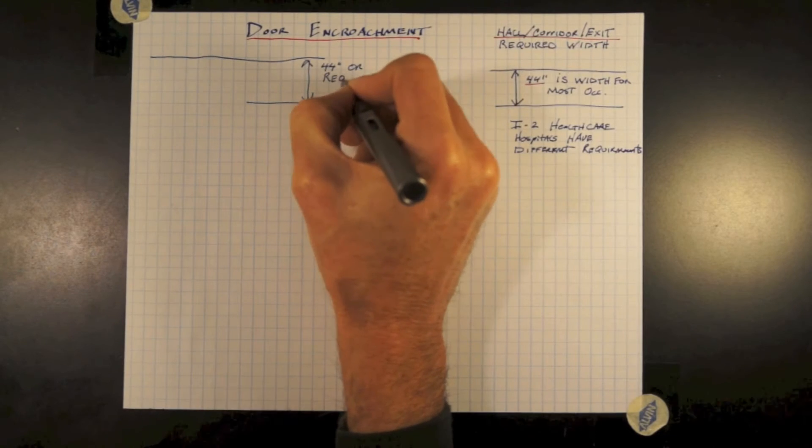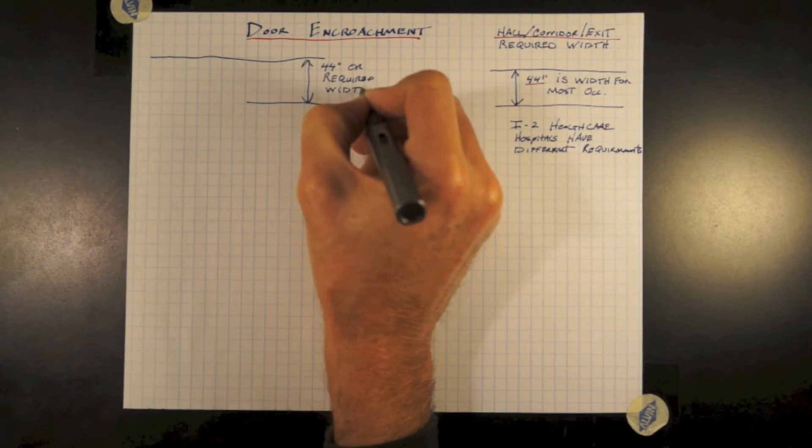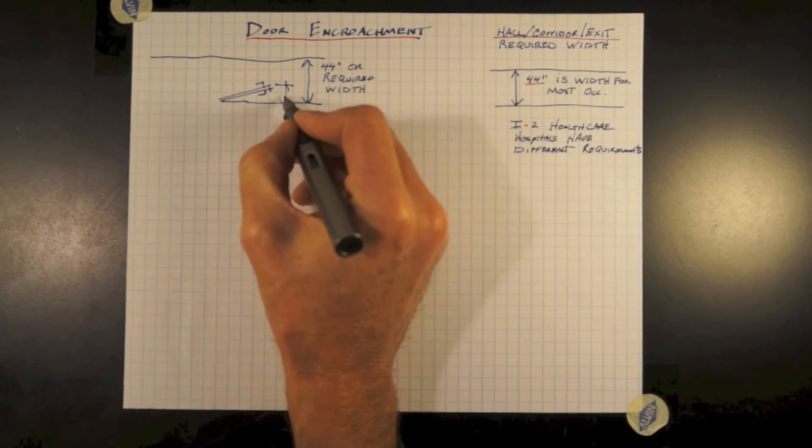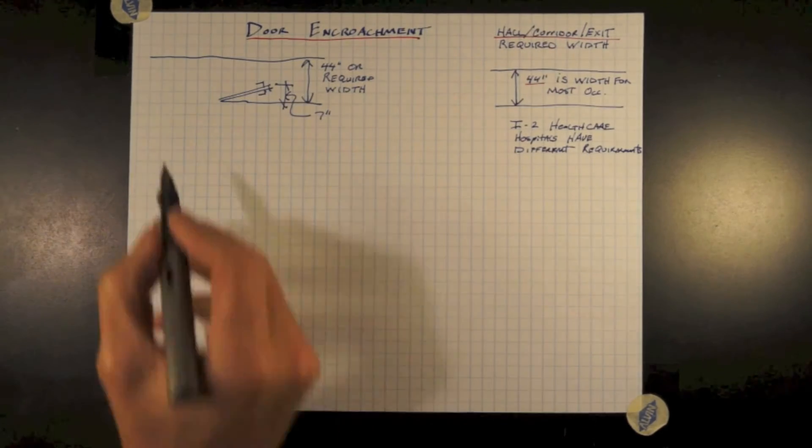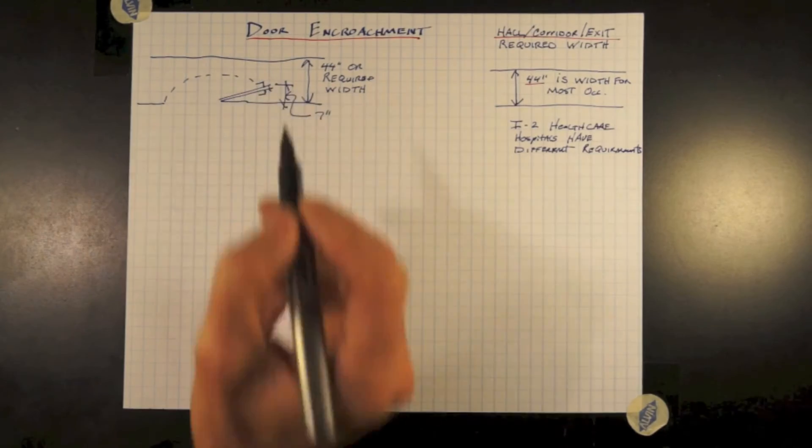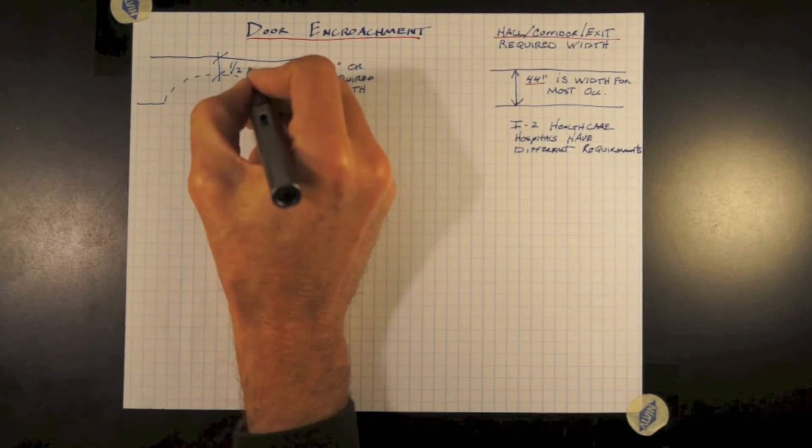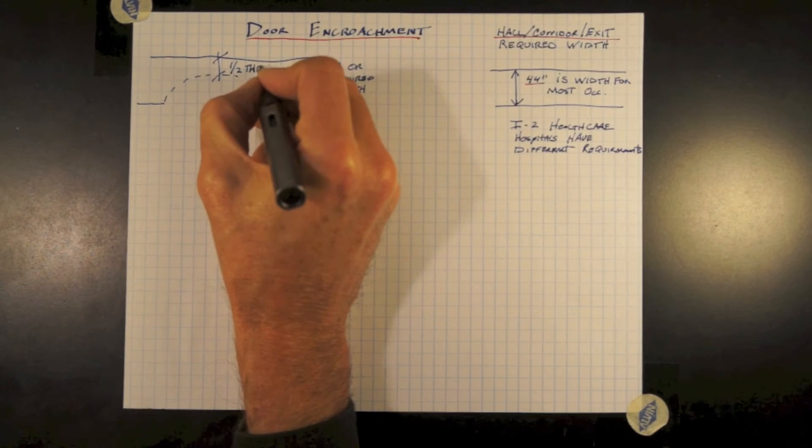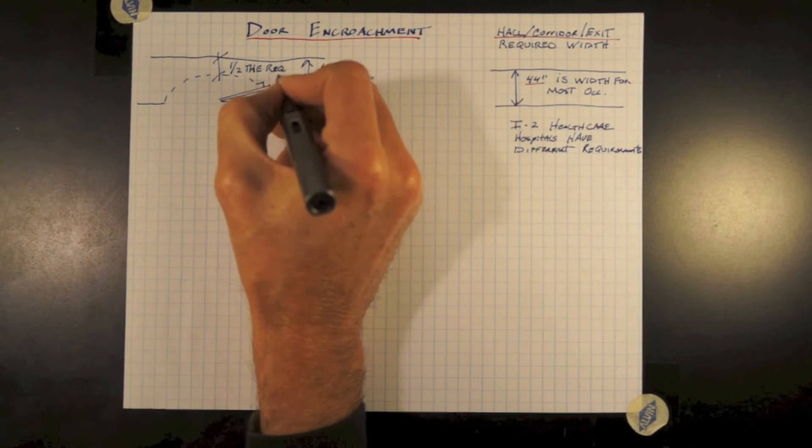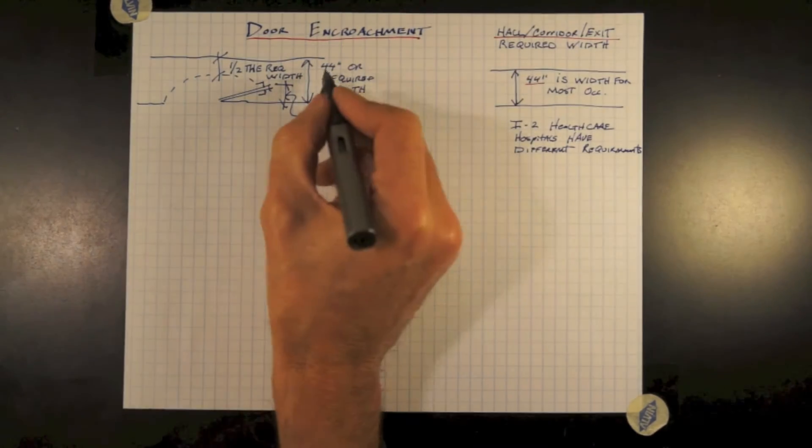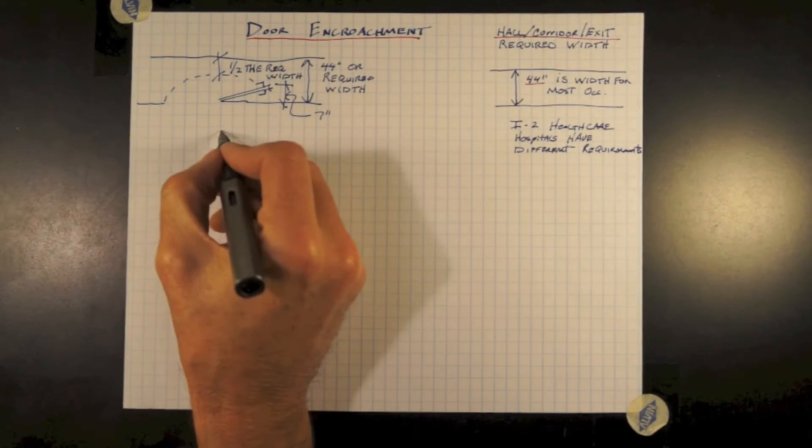A door, including all its handles from edge of wood to door, cannot be greater than 7 inches when the door is fully open in its open position. And this is a 180 degree swing door. The swing at its narrowest point adjusting the corridor, hallway, or exit passageway cannot be less than one half the required width.